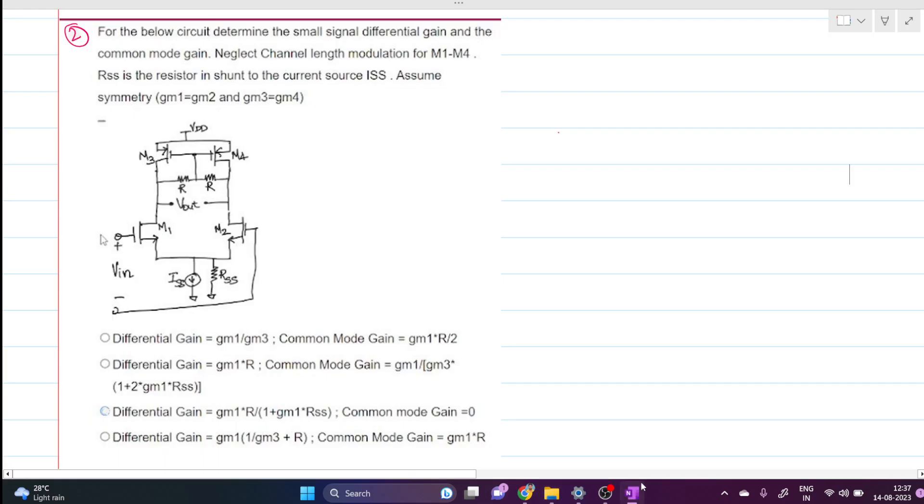Hi everyone, welcome to this video. Today we will solve this problem. For the below circuit, determine the small signal differential gain and the common mode gain. Neglect channel length modulation for M1, M2, M3, and M4. Rss is a resistance in shunt to the current source Iss.